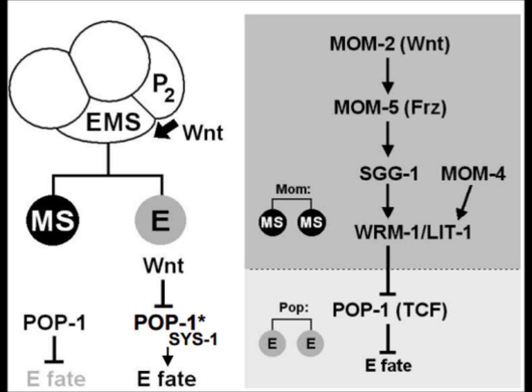More of MS. This pathway points specifically to the role of Wnt signaling in repressing the MS fate. If Wnt signaling is not present between P2 and EMS, both anterior and posterior halves of EMS will develop into MS-like cells.